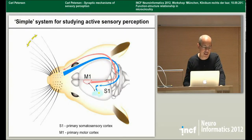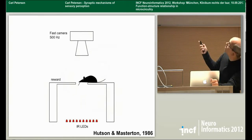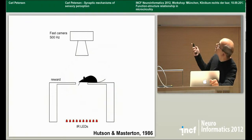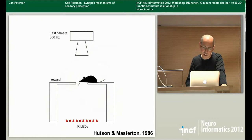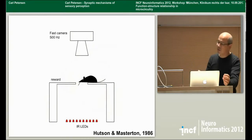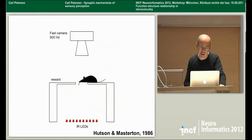I want to show you movies of mice using their whiskers to gather information and make decisions. The task was developed by Hudson and Masterton in 1986 for rats. We use it with mice: a mouse on an elevated platform needs to seek out a target platform where there's a reward. The distance is so far that the only way it can detect that platform is through its whiskers — it needs to search out the space around the target to discover its location, then jump across and get the reward.